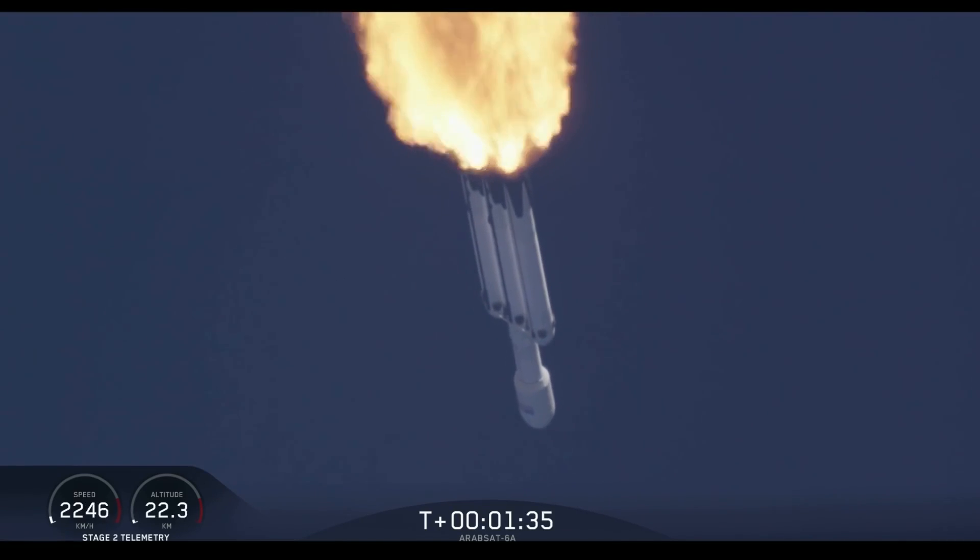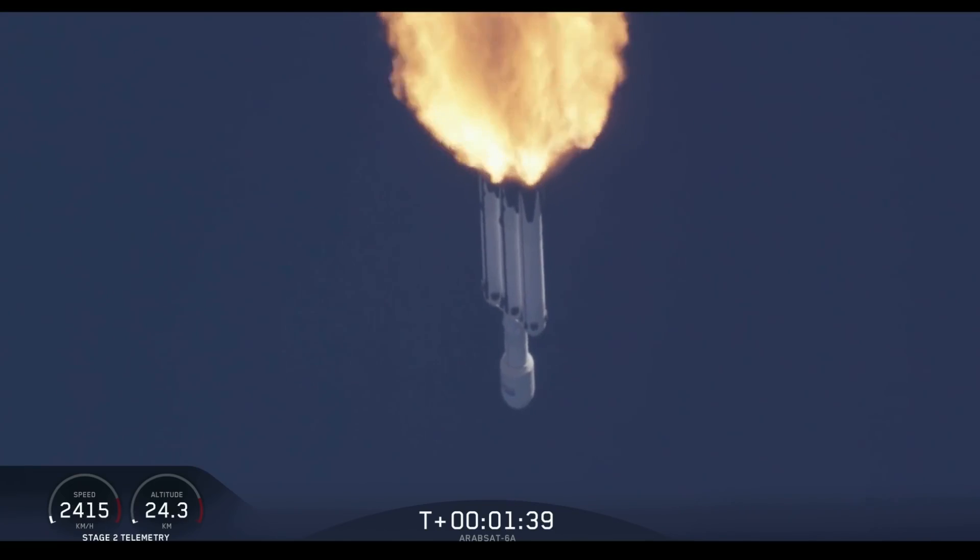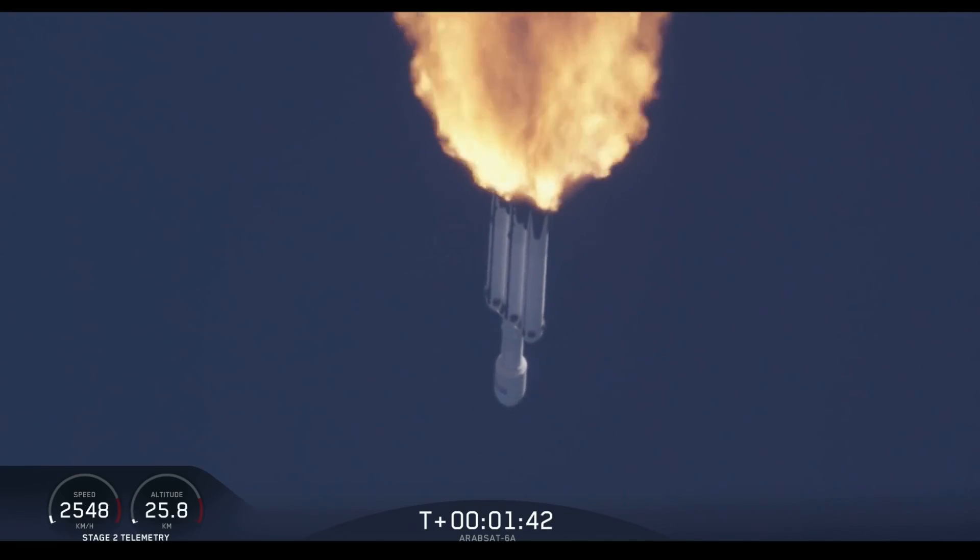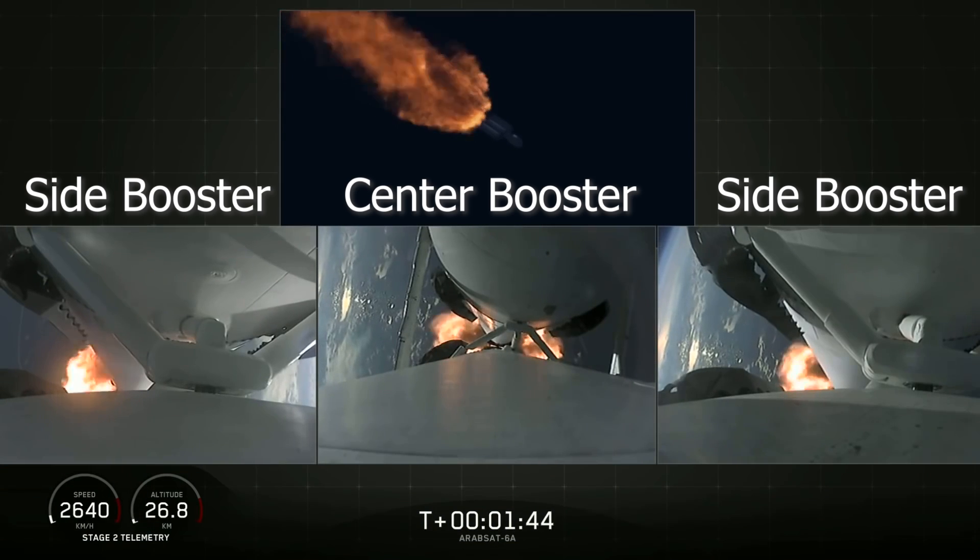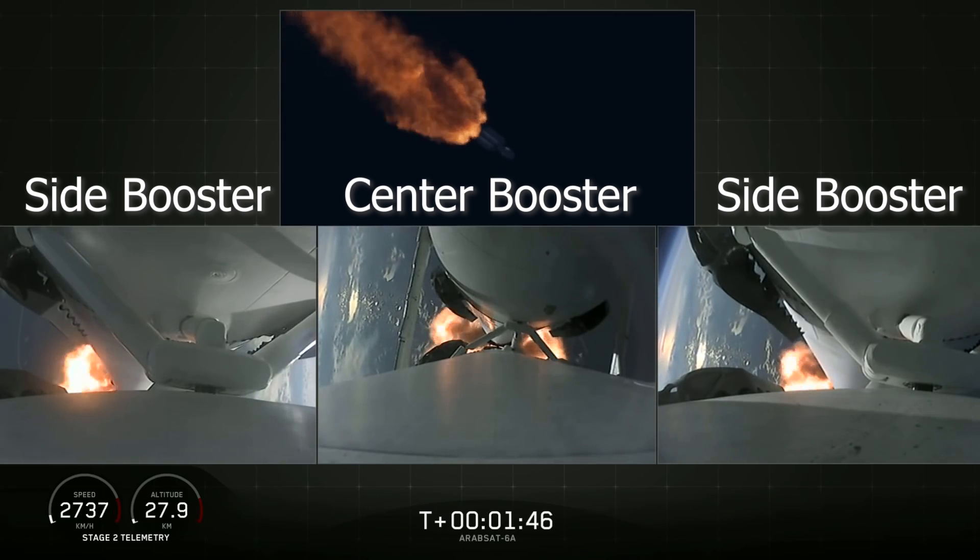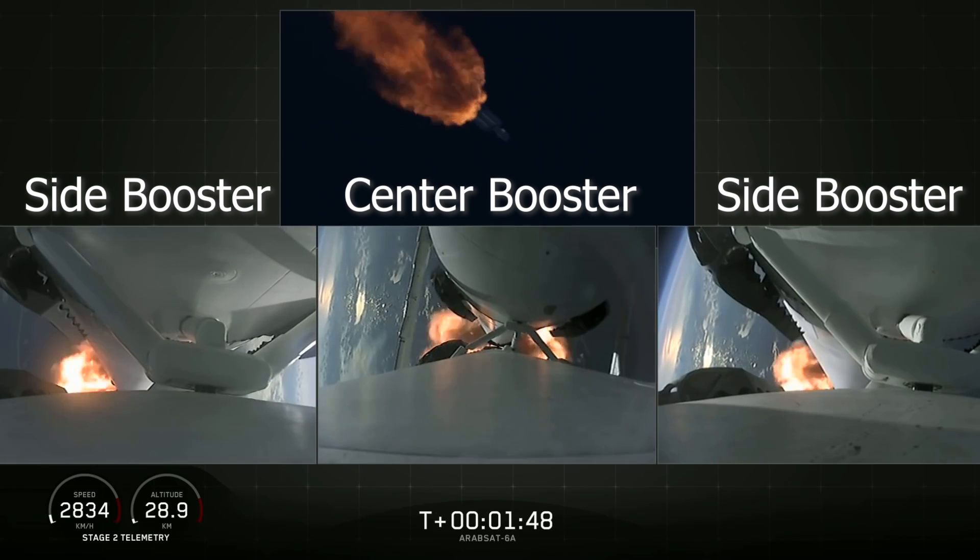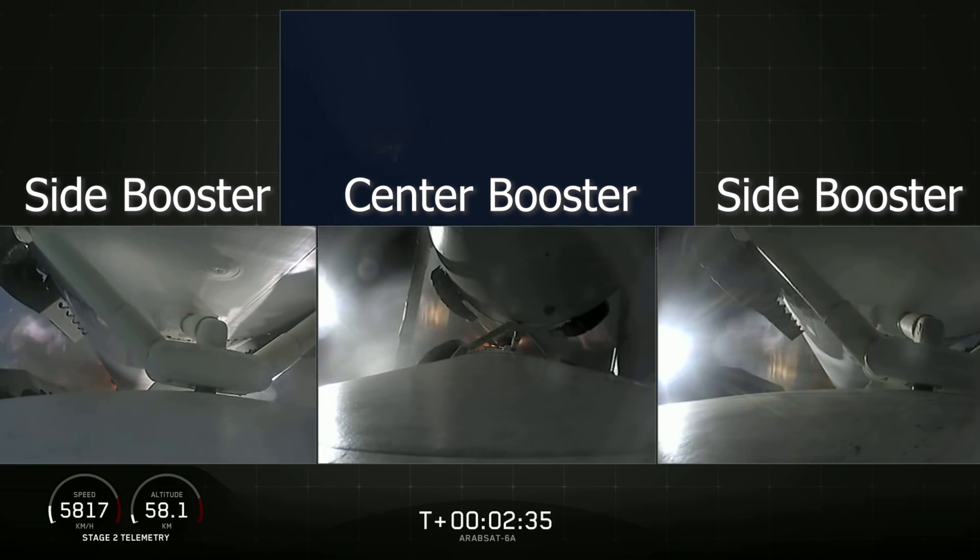Now max Q, if you aren't familiar with, is actually the maximum dynamic pressure experienced by the vehicle. And now that explanation might not make sense. But overall, it's basically where the maximum loads are applied to the vehicle. So where it's going to be under the most stress. So from a structural standpoint, if it passes the max Q point, then it's gonna most likely be successful. But there are other things that could still come into play.